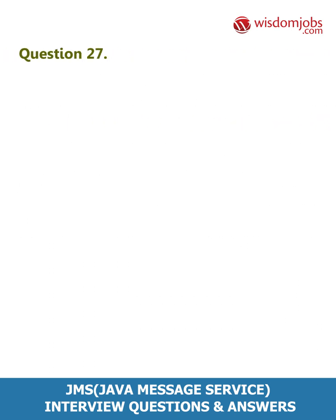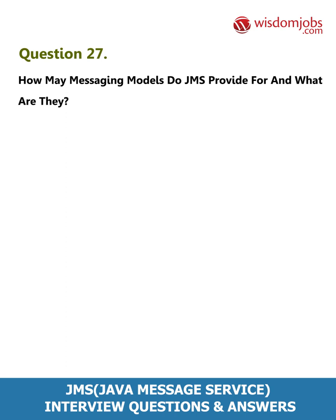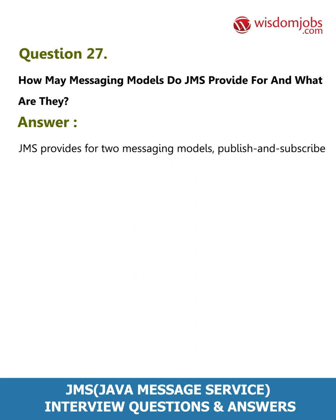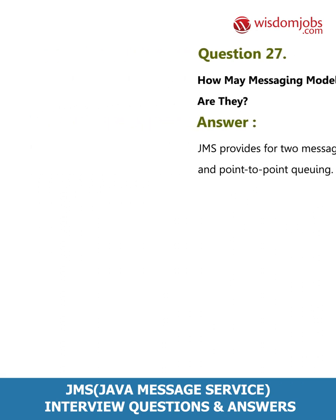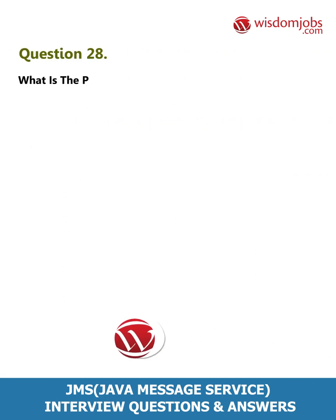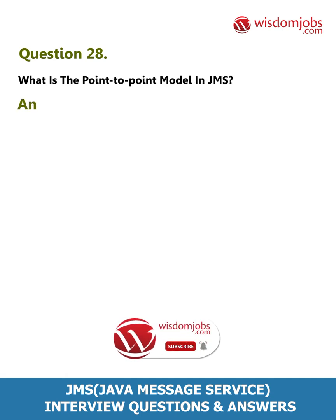Question 27: How many messaging models does JMS provide, and what are they? Answer: JMS provides two messaging models — publish-and-subscribe and point-to-point queuing.